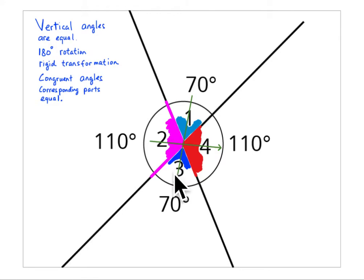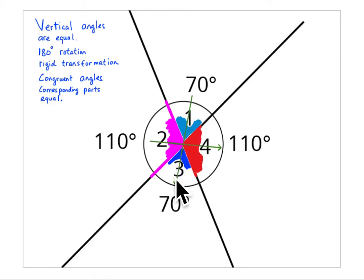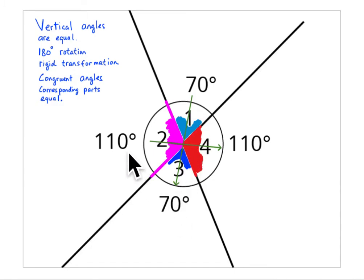So this is 70 degrees and this is 70 degrees. If you go through the intersection, that's called a vertical angle — they will always be equal. Vertical angle this way: 70 and 70. Vertical angle the other way: 110 and 110.